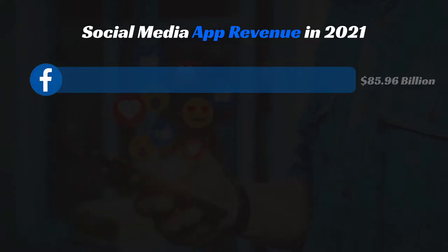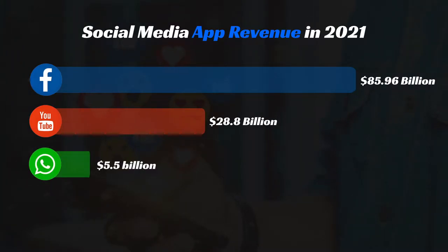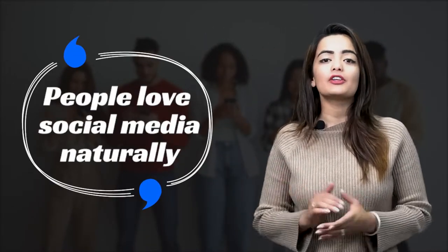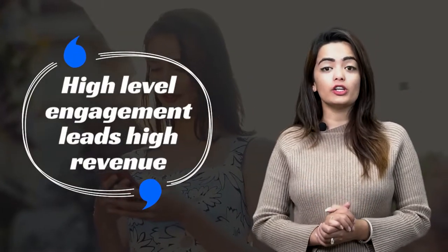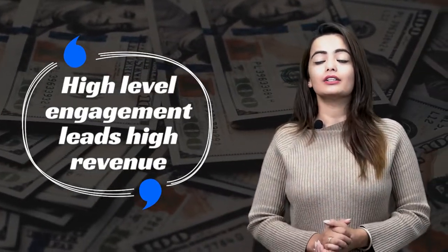Looking at some successful social media applications and their revenue in 2021: Facebook earned more than 85 billion US dollars, YouTube stands at more than 28 billion US dollars, WhatsApp at more than 5 billion dollars, and Instagram is earning more than 24 billion dollars. These facts prove that people are using social media applications naturally, and the high level of engagement leads to high revenue from advertising and other sources.